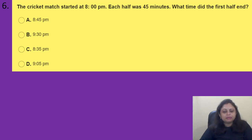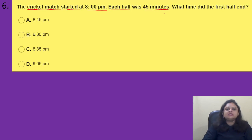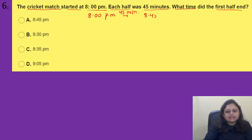Coming to the next question: a cricket match started at 8 p.m. Each half was 45 minutes. What time did the first half end? Option A) 8:45 p.m., B) 9:30 p.m., C) 8:35 p.m., D) 9:05 p.m. In cricket there are two halves. It is asking when the first half ends. If it starts at 8 p.m. and the first half ends after 45 minutes, the time is 8:45 p.m. The correct answer is option A, 8:45 p.m.